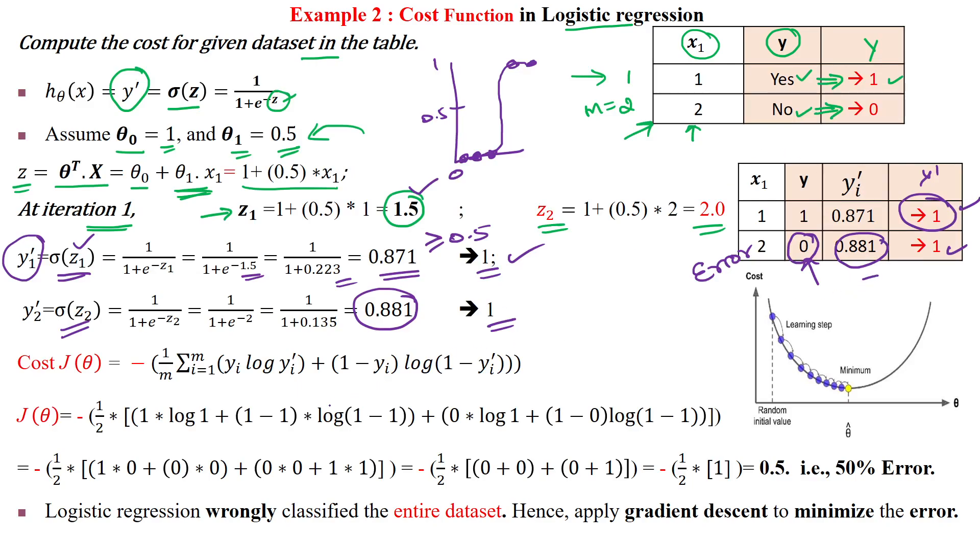We apply the binary cross-entropy cost function: -1/m Σ(yᵢ log(ŷᵢ) + (1-yᵢ)log(1-ŷᵢ)) for i=1 to m. Substituting values with m=2 for the first sample: